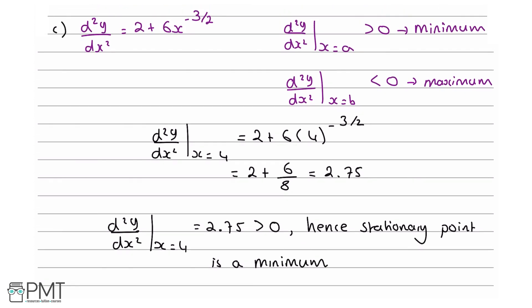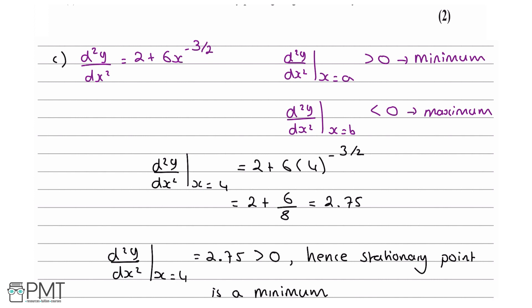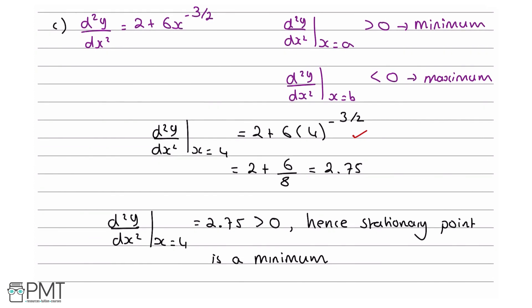This question is worth two marks. Your first mark comes from substituting x equals 4 into d squared y by dx squared. Your second mark requires stating both that d squared y by dx squared at x equals 4 equals 2.75, which is greater than 0, and hence the stationary point is a minimum. Both points are needed to earn the second mark.